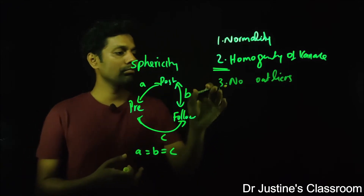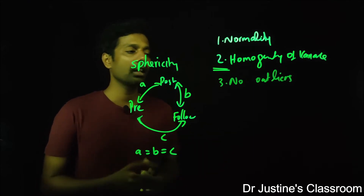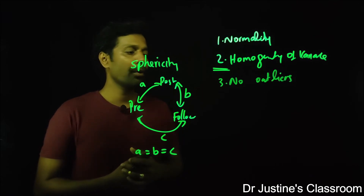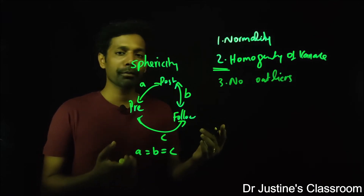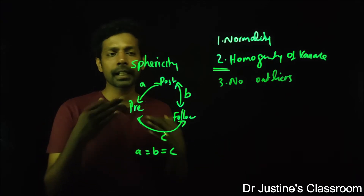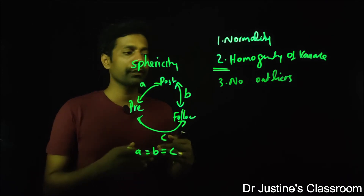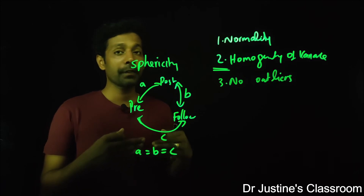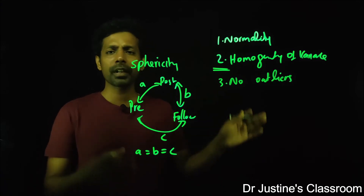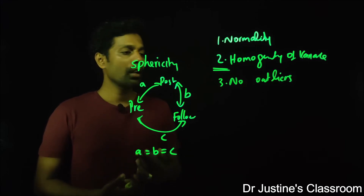The third assumption is no outliers — you should not have extreme values in the data, as they can make results unreliable. To check this, you can draw a box plot, which divides data into four quartiles. Values more than three standard deviations from the mean are typically considered outliers.